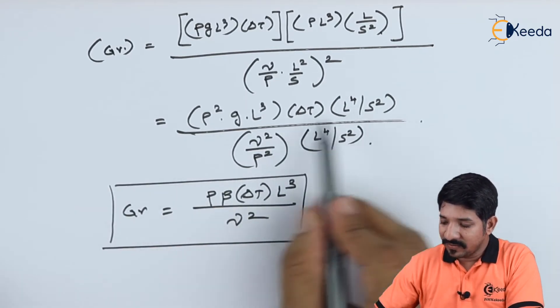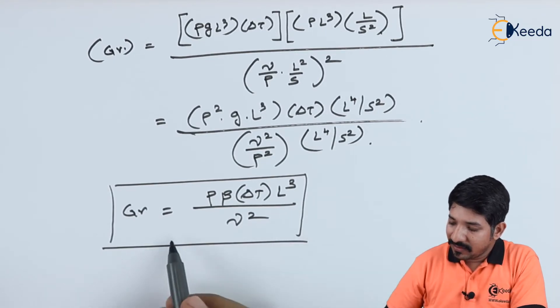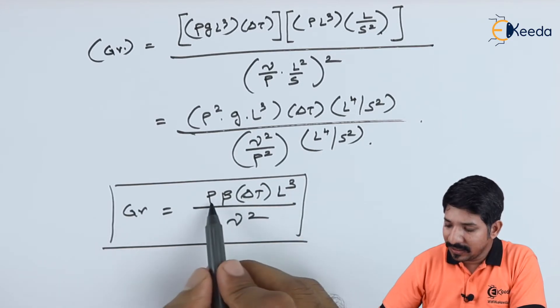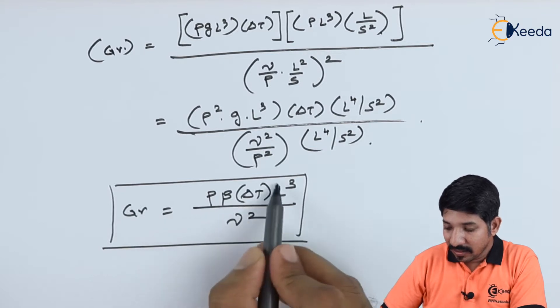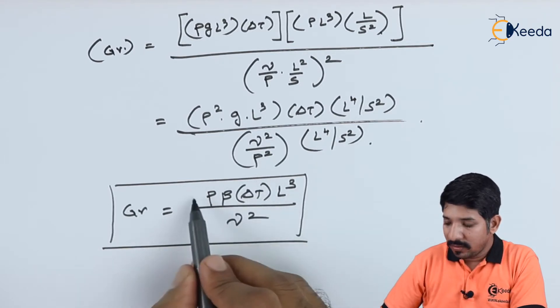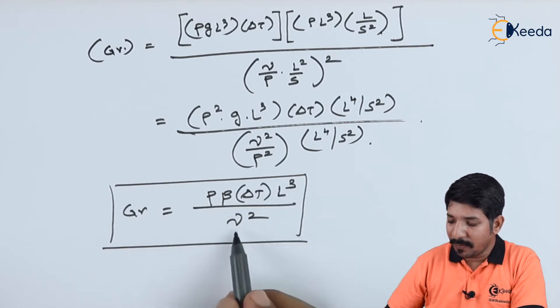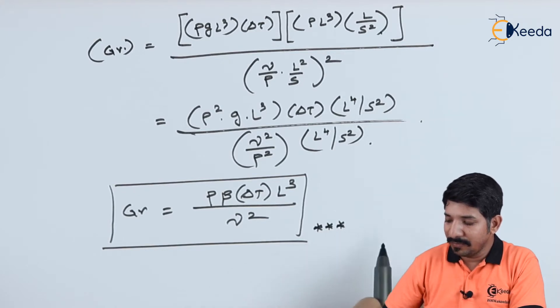So, if we start solving for these variables, we are going to end up into something like this. Now, here basically, we can say that the Grashof number is nothing but rho beta G into delta t. Now, this accounts for buoyant force per unit mass into L cube upon the square of kinematic viscosity. Now, this is the formula which is a very important formula for the Grashof number.